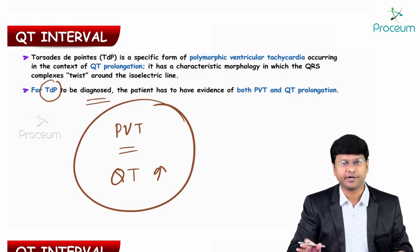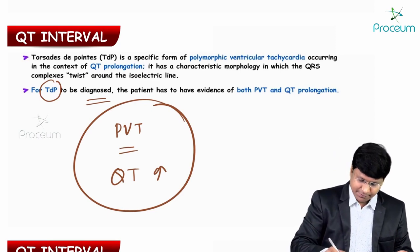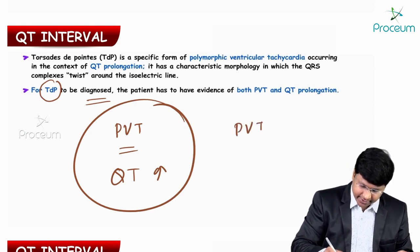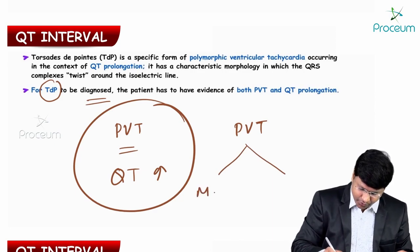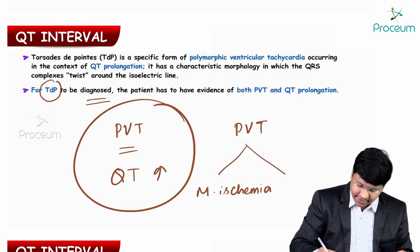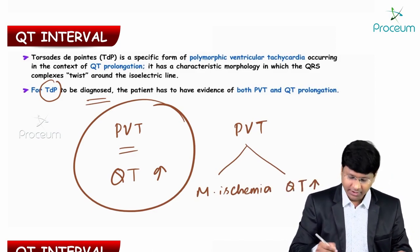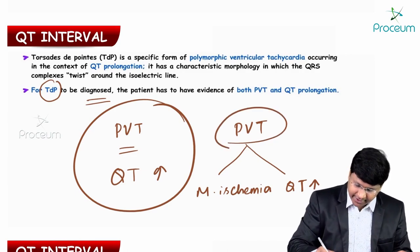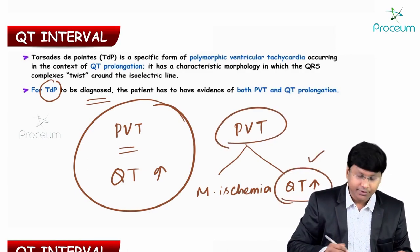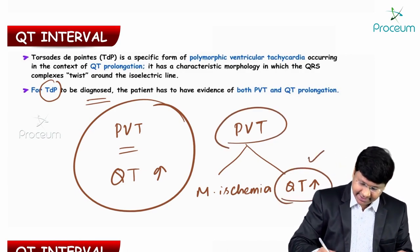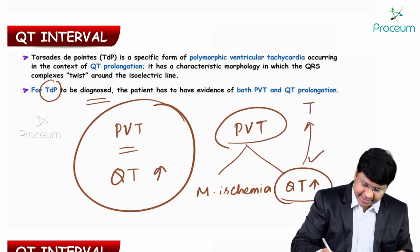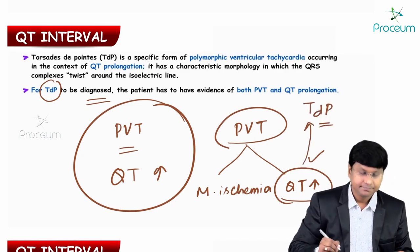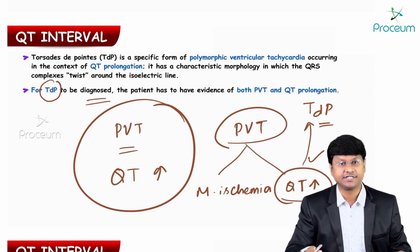One important point to understand: polymorphic ventricular tachycardia can be due to two reasons — myocardial ischemia, or QT prolongation. The polymorphic ventricular tachycardia occurring specifically because of QT prolongation is what is called torsades de pointes.